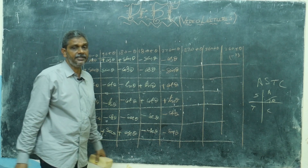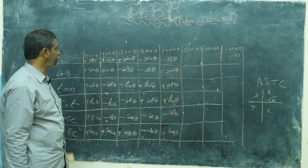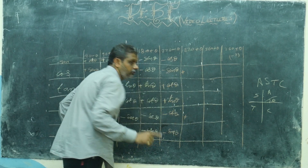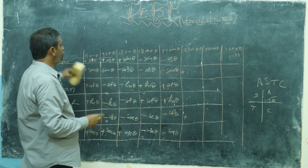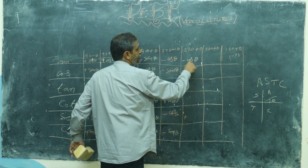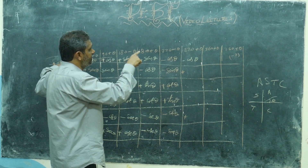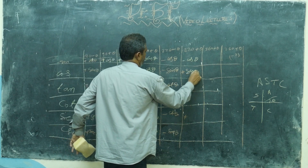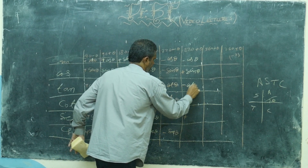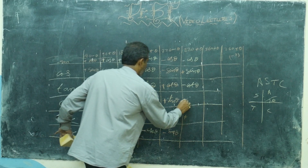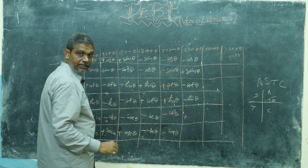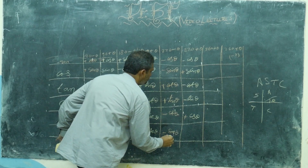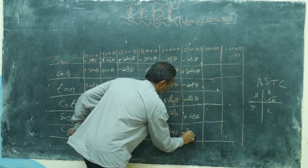Then 270 plus — where does it stand? In the fourth quadrant. Fourth quadrant — who is positive? Cos and its reciprocal secant. So do not see the answer; see the question only. Sine of 270 plus theta — sin is not positive here, so it is minus cos theta. Cos 270 plus theta is plus sin theta. Tan 270 plus theta is minus cot theta. Cot 270 plus theta is minus tan theta. Secant 270 plus theta is cosecant theta. Cosecant 270 plus theta is minus secant theta, because only cos and secant are positive.